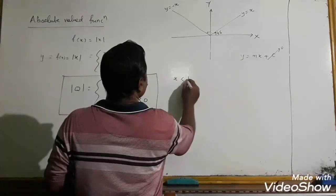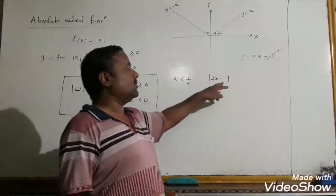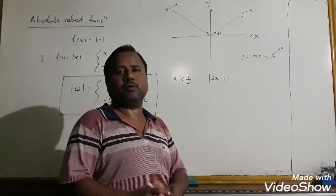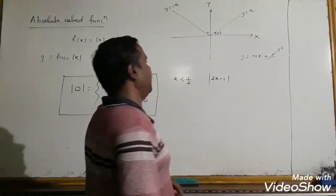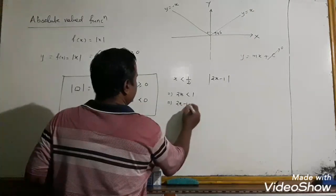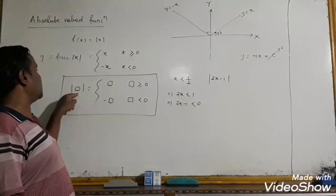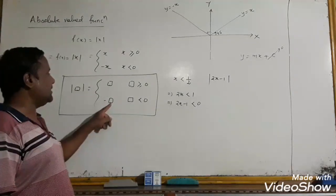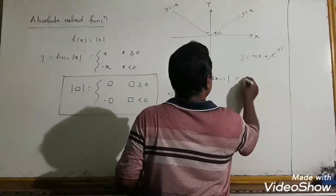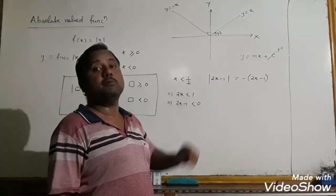Suppose x is less than one-half. What is the absolute value of (2x − 1)? We need to determine whether 2x − 1 is positive or negative. If x < 1/2, then 2x < 1, which implies 2x − 1 < 0 — so it is negative. Therefore, mod(2x − 1) = −(2x − 1).